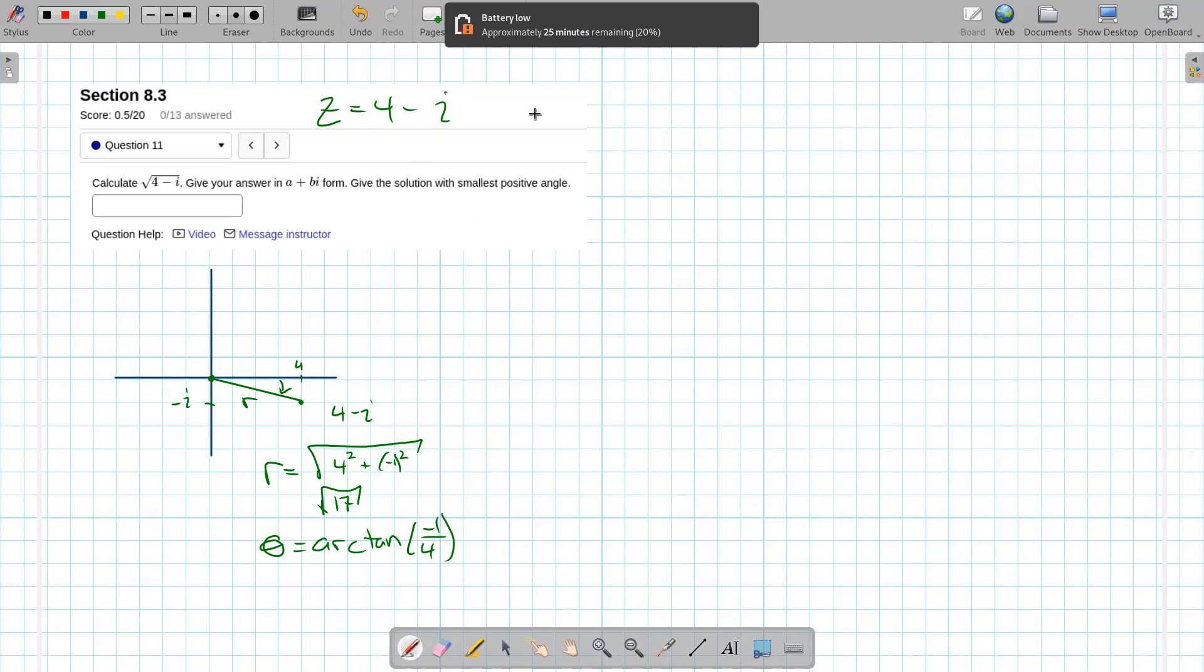So I can take this number four minus i and also write it in its polar form, which would be square root of 17 times e to the power i theta, where theta is this number right here.